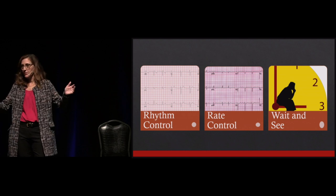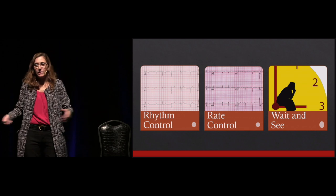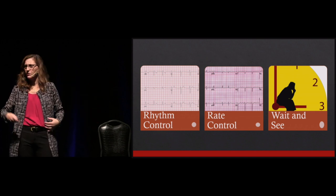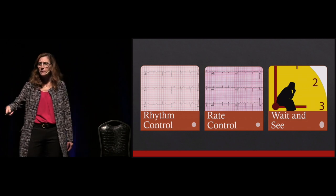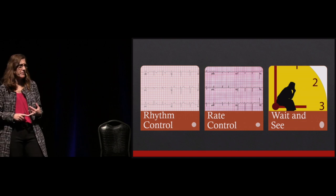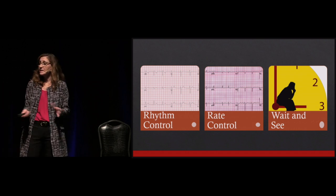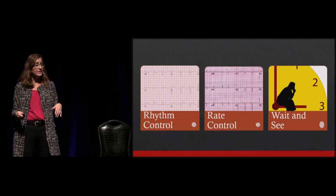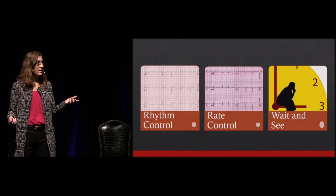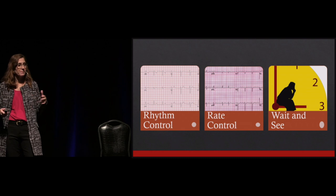When a patient comes in with AFib or AFib with RVR, first determine stability. We're not talking about sending home anyone unstable — angina, congestive heart failure, hypotension. Exclude dangerous causes: severe metabolic derangements, sympathomimetic overdose, thyrotoxicosis, PE causing the AFib. If it's run-of-the-mill primary hemodynamically stable AFib, you have three choices: rhythm control, rate control, and the newest is wait and see. Rhythm control — where do we look? Canada. Ian Steele and his group started the Ottawa Aggressive Protocol, talking about early aggressive rhythm control of AFib in the ED.